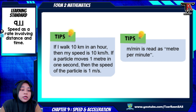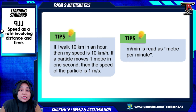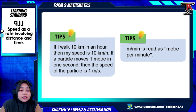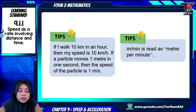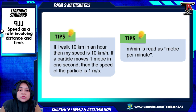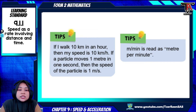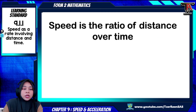Tips number one: if I walk 10 kilometers in an hour, then my speed is 10 kilometers per hour. If a particle moves 1 meter in 1 second, then the speed of the particle is 1 meter per second. The second tip is how to read units — for example, 'm per min' is read as meters per minute.